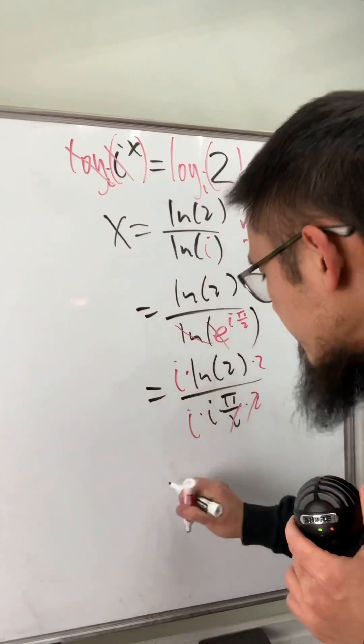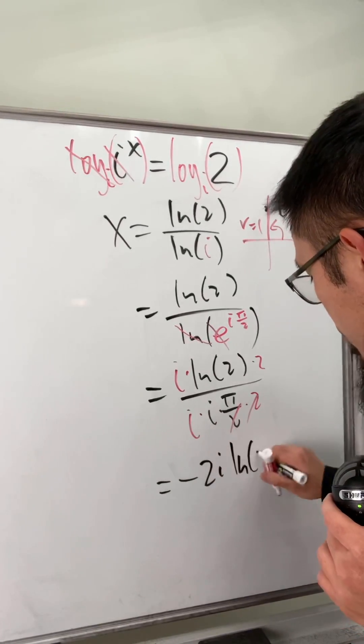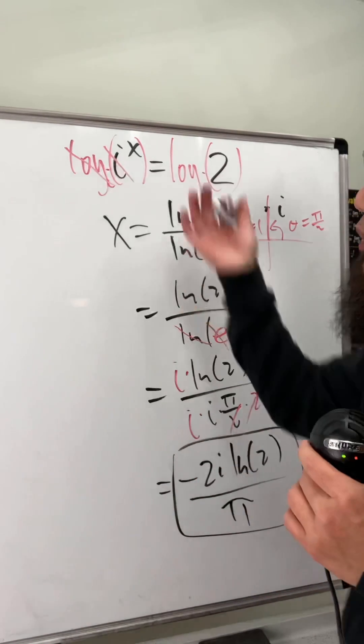And then let's also multiply the bottom and top by 2. So you can see that i times i is negative 1, put a negative on the top. So altogether, we have negative 2 i ln 2 over just the pi on the bottom. So this is a solution to this right here.